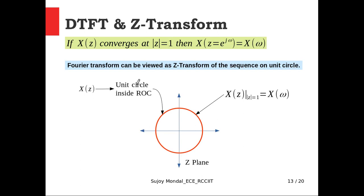How is the DTFT related to the Z-transform? Assume x[n] is a signal whose Z-transform X(z) has an ROC that includes the unit circle, meaning the Z-transform is finite on the unit circle. Under that condition, the DTFT can be computed directly from the Z-transform by evaluating it on the unit circle. The DTFT is therefore the Z-transform of the sequence evaluated on the unit circle, provided the unit circle lies within the ROC.